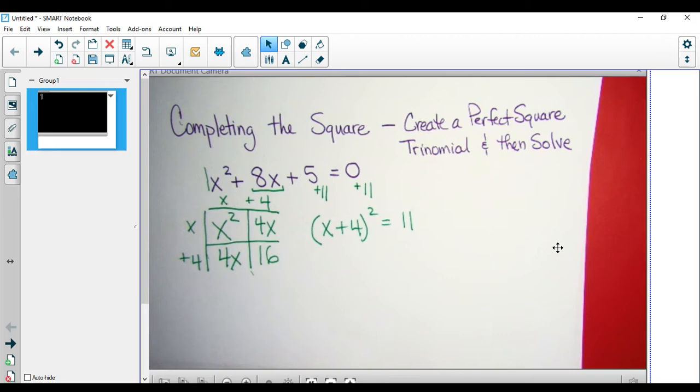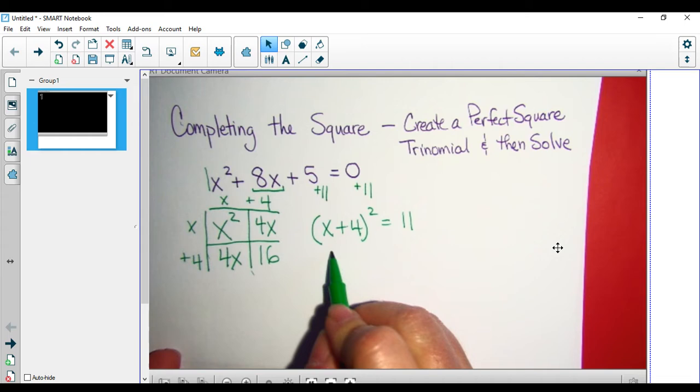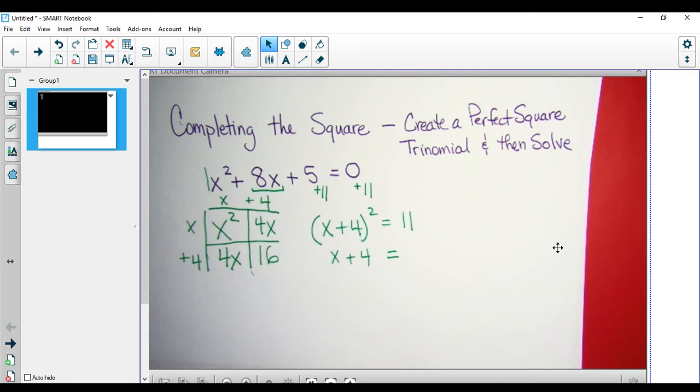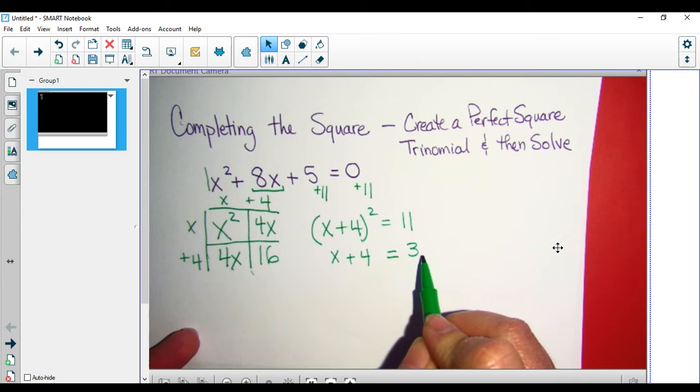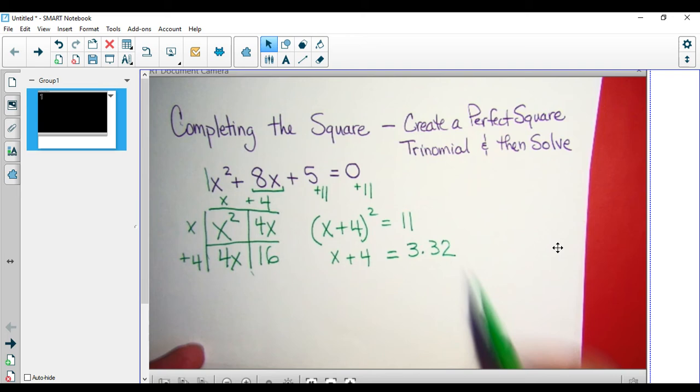I'm going to take the square root on both sides. So I get x plus 4 equals the square root of 11, which now I can't get my calculator to come up. There we go. So square root of 11 is 3.316, so I'm going to round it to 3.32.